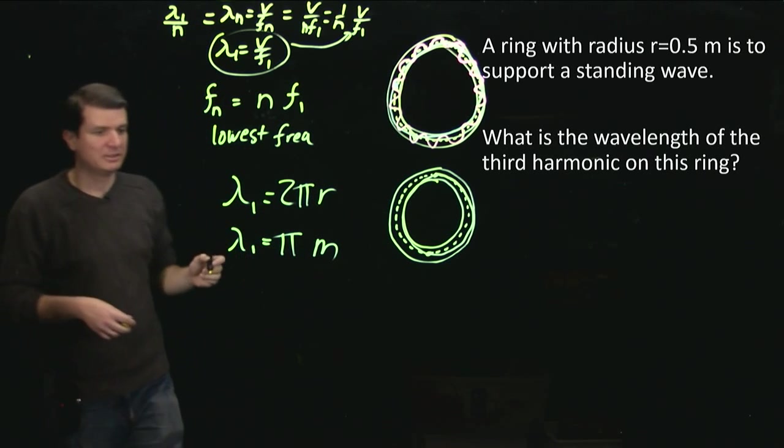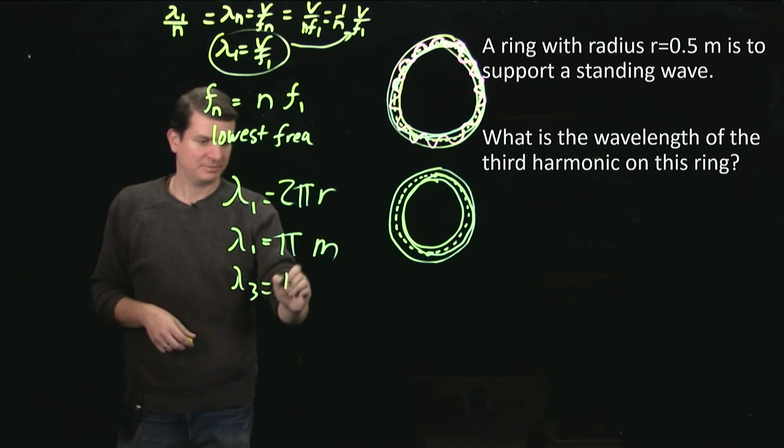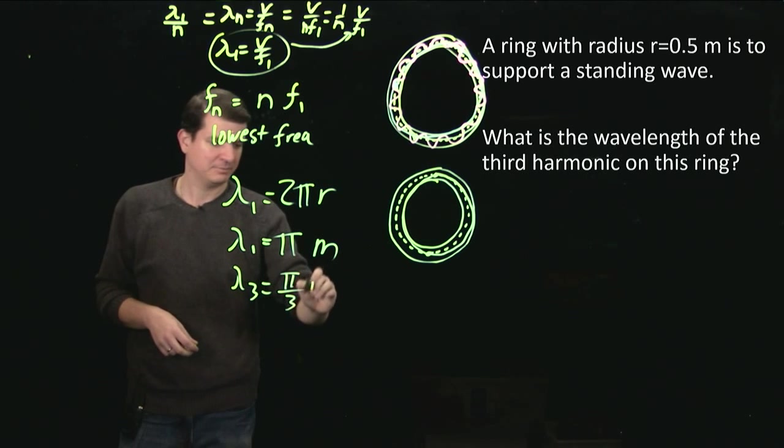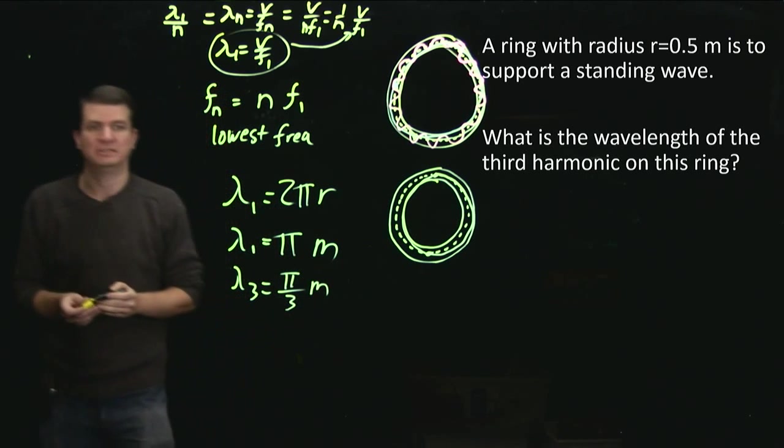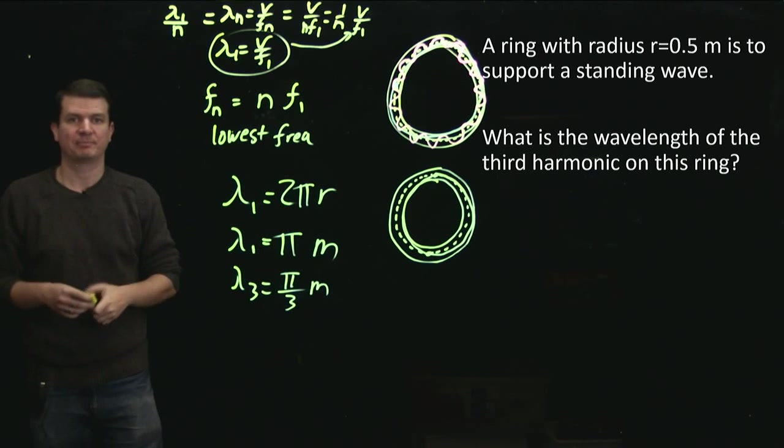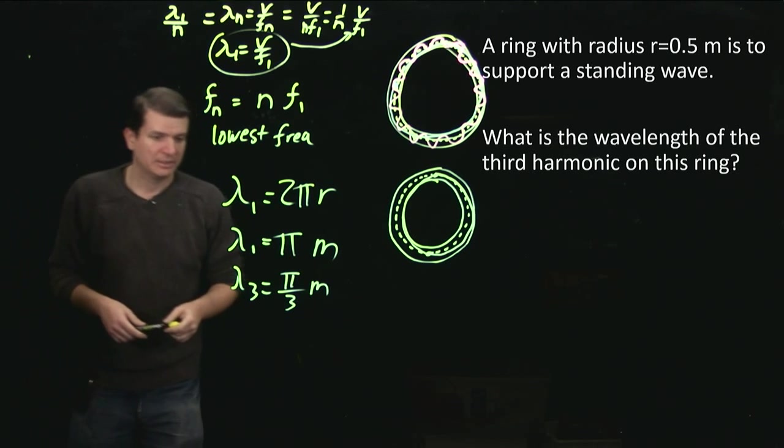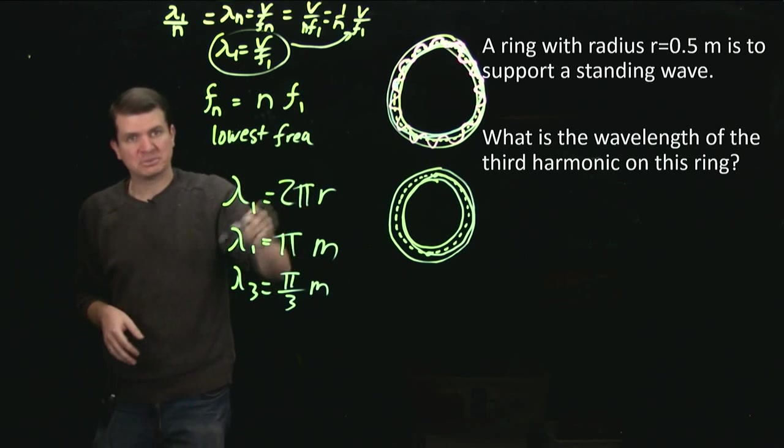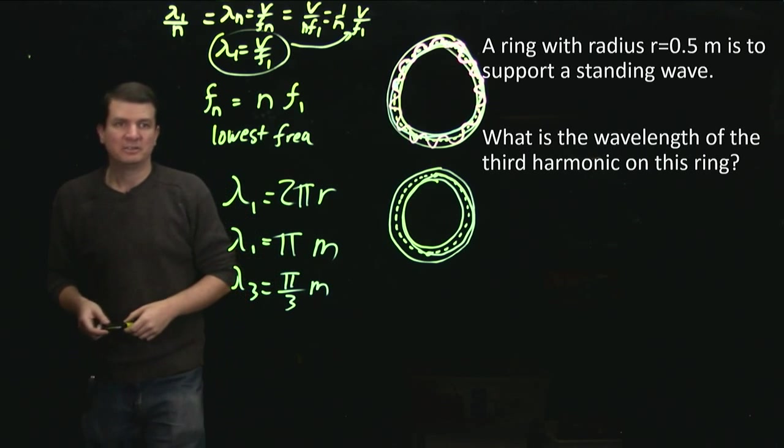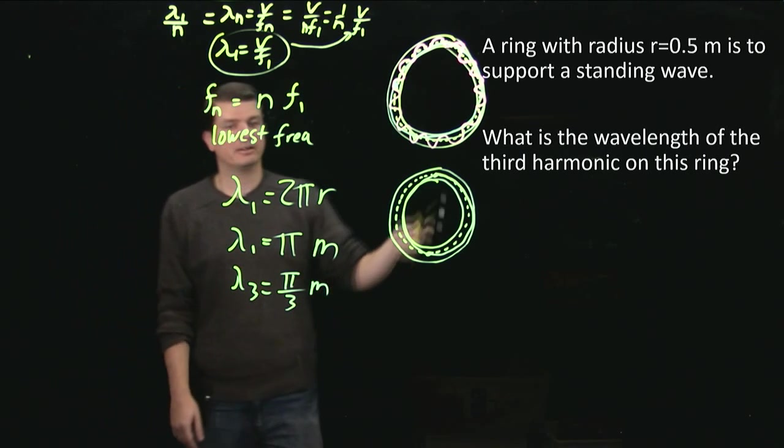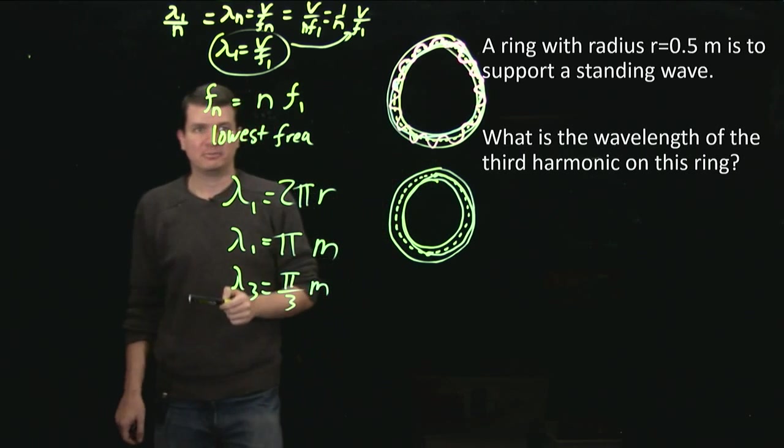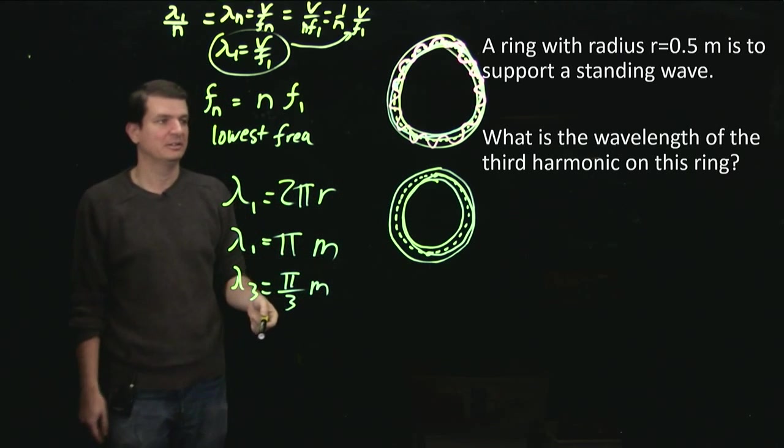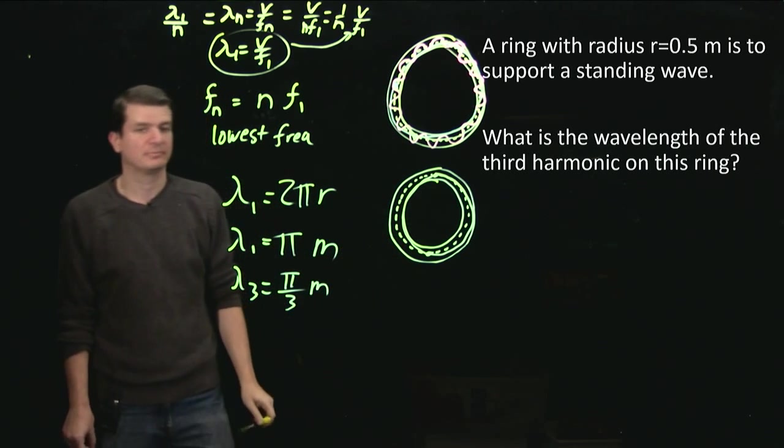So lambda 3 is π on 3 meters for our units. So that's all there is to understanding this problem. It's a simple reworking of the frequency in terms of wavelengths. And the real exciting part is understanding how to draw these kind of pictures and realize that the wave has to close. What does that imply for the wavelength?